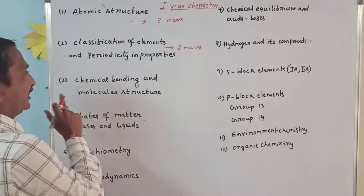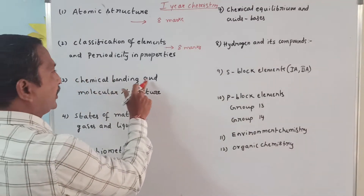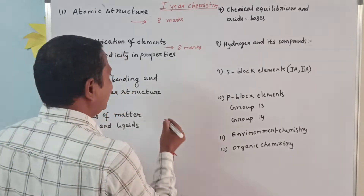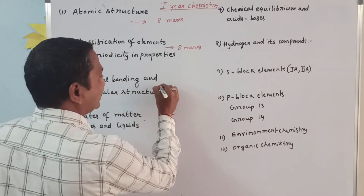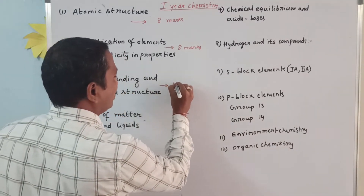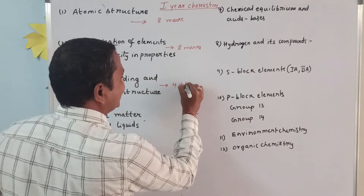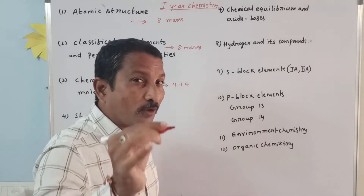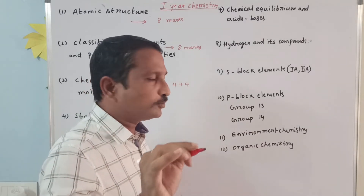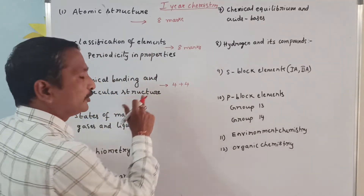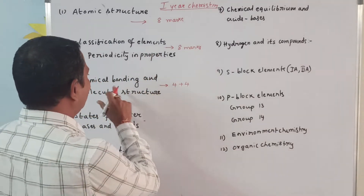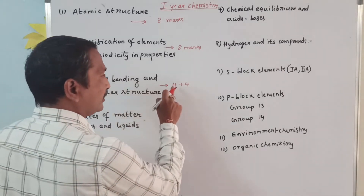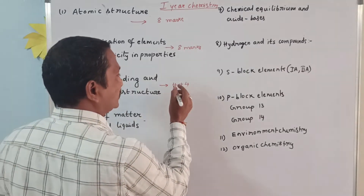Third unit: chemical bonding and molecular structure. In this unit, the weightage is eight marks, but there are two four-mark questions. There is no two-mark question and no eight-mark question in chemical bonding, but there are two four-mark questions.